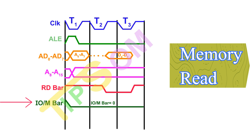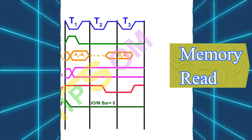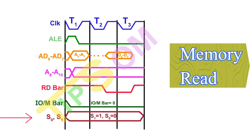Next is the IO/M bar. Since this is a memory operation — data is being read from a specific memory location — the IO/M bar will be 0 the entire time. If an input/output operation were active it would be 1, but since this is a memory operation it stays 0. Next is S0 and S1 status signals. As I discussed in my previous video, for the memory read operation S1 will be 1 and S0 will be 0. That completes the memory read timing diagram.